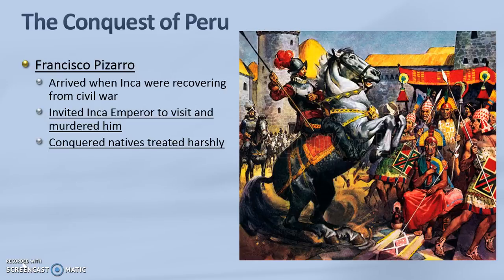Peru was also conquered by the Spanish, and the man who led this conquest is Francisco Pizarro. He arrived when the Inka were recovering from a civil war, so they were weakened from fighting one another. Pizarro invited the Inka emperor to visit and then had him murdered. After that he was able to easily conquer the Inka, also because of superior weapons, and the actual conquest was a lot harsher than the Aztec conquest.